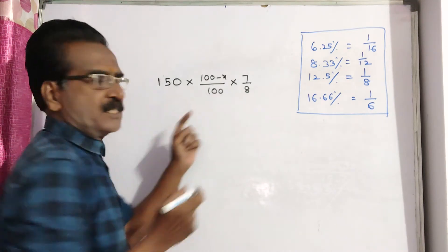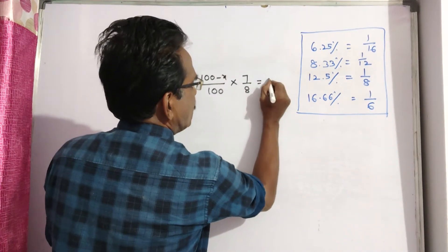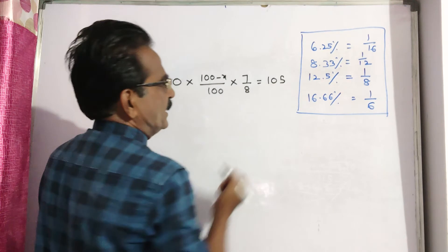So after these two successive discounts, the selling price of the shirt is given that 105.